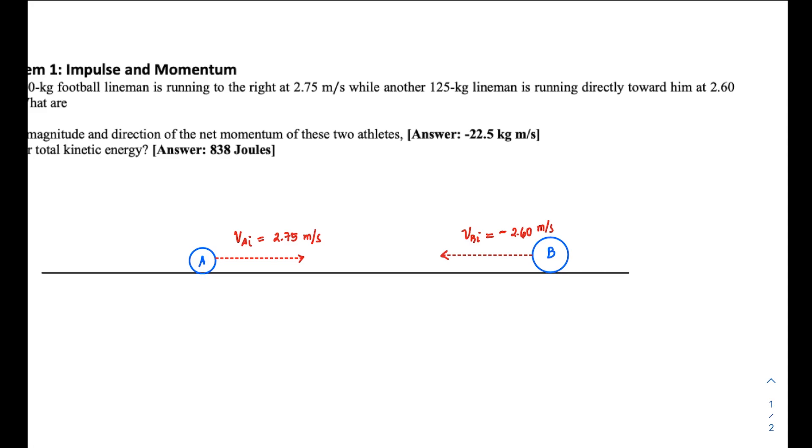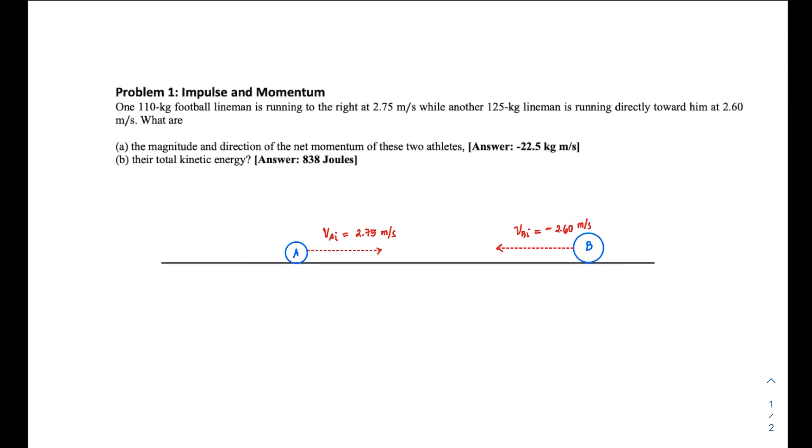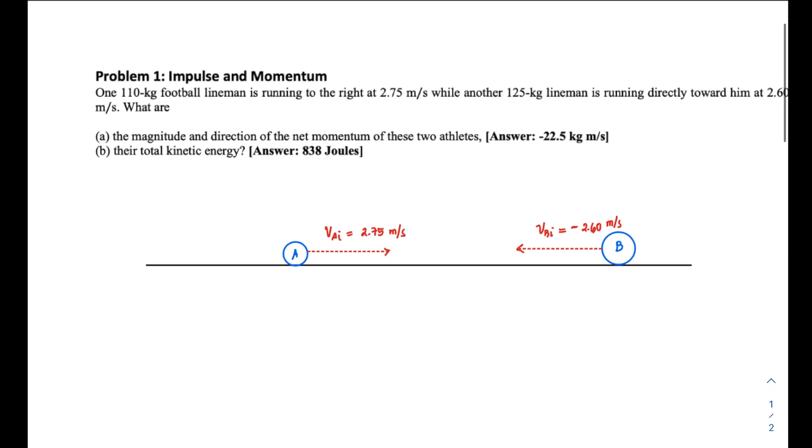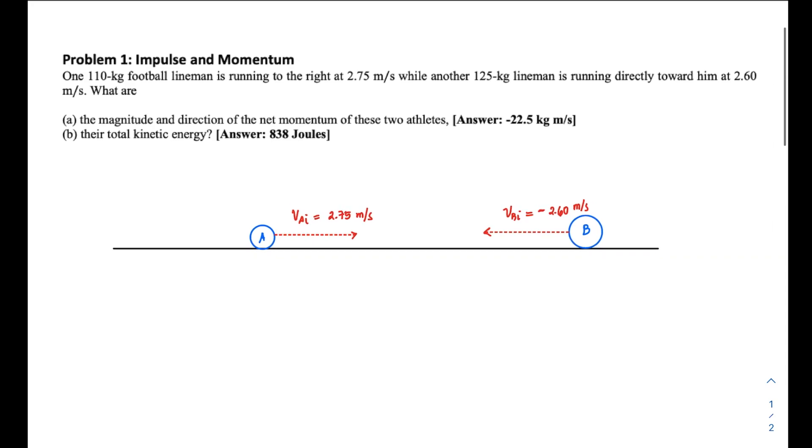For part (a), we are asked to find the magnitude and direction of the net momentum of these two athletes. You have the expected answer there, but I'll specify: the mass of A (the first lineman) is 110 kg; m_B (the mass of the second lineman moving left) is 125 kg.